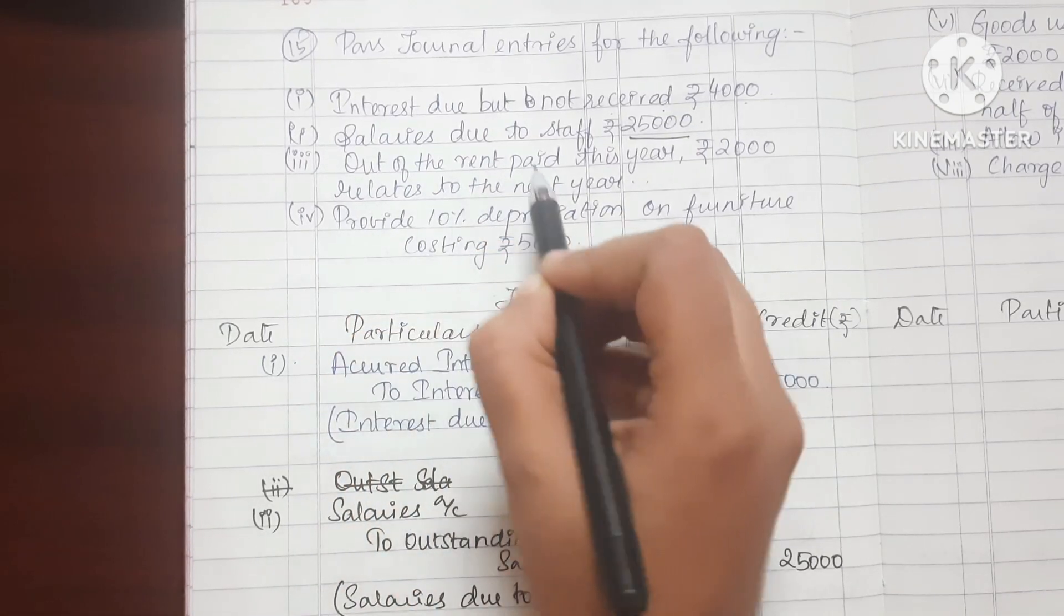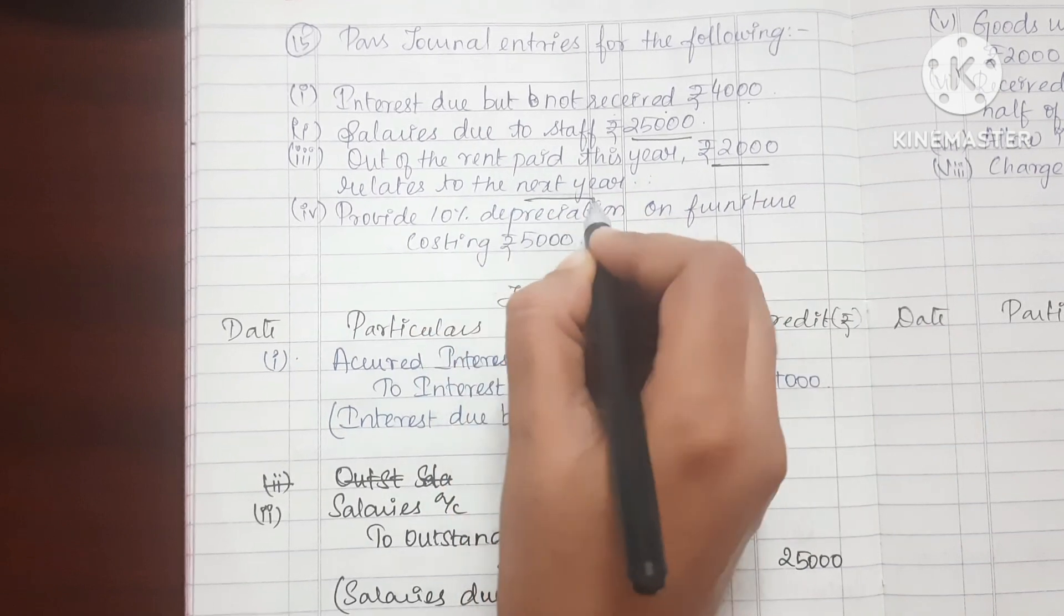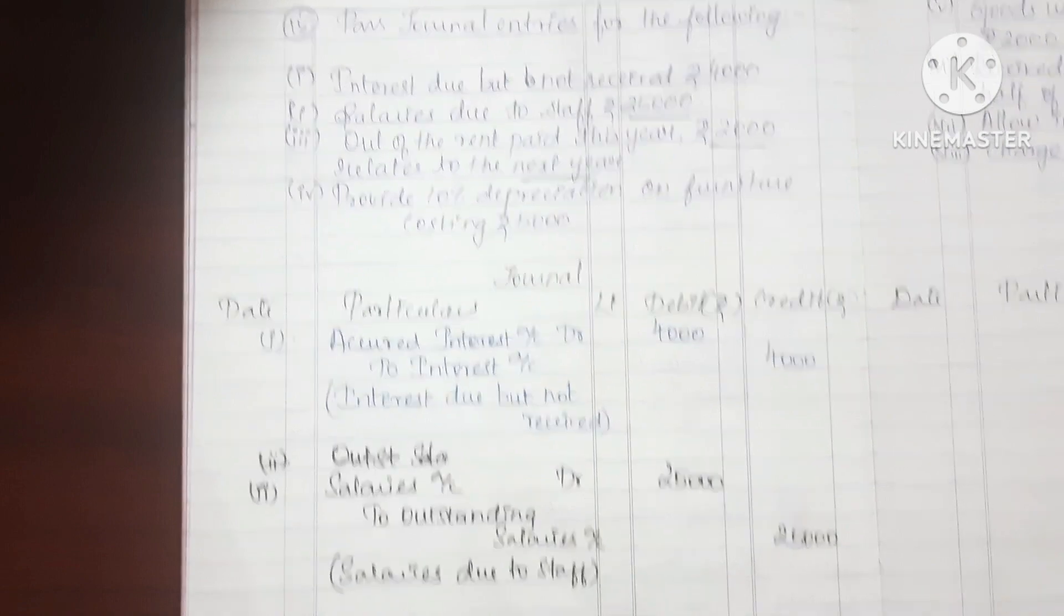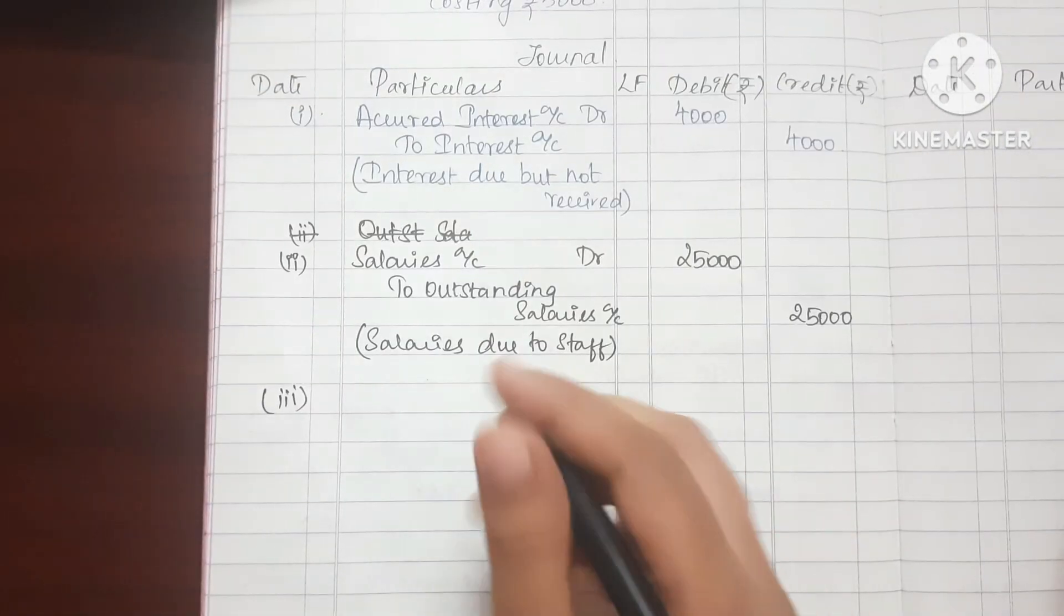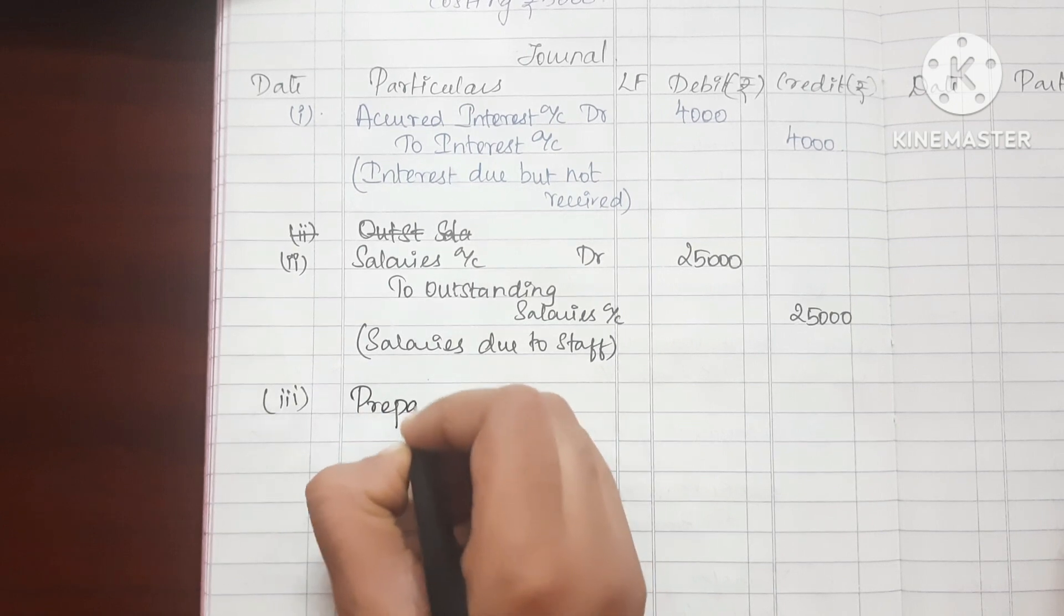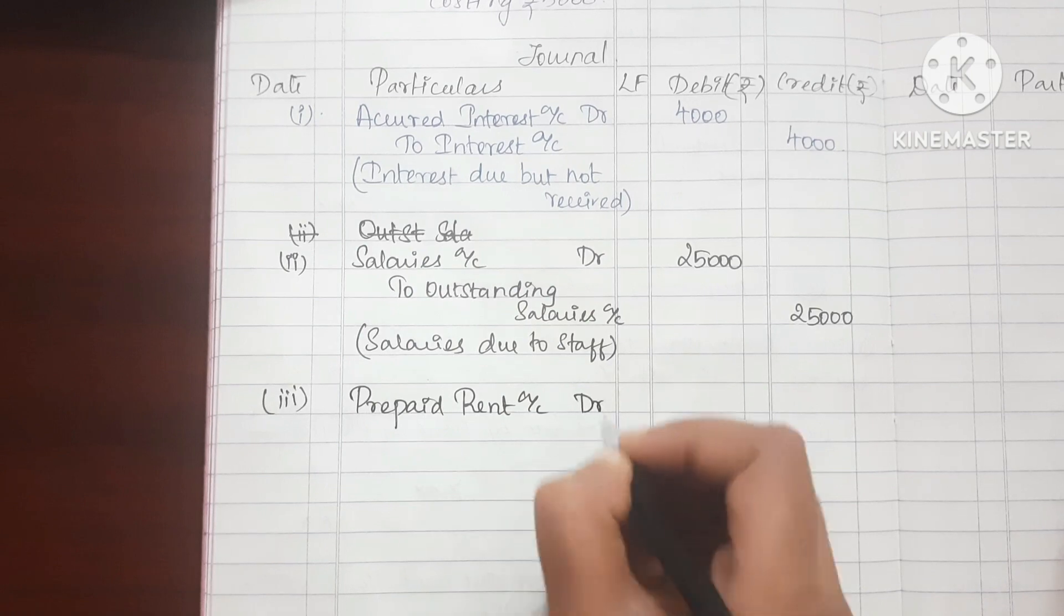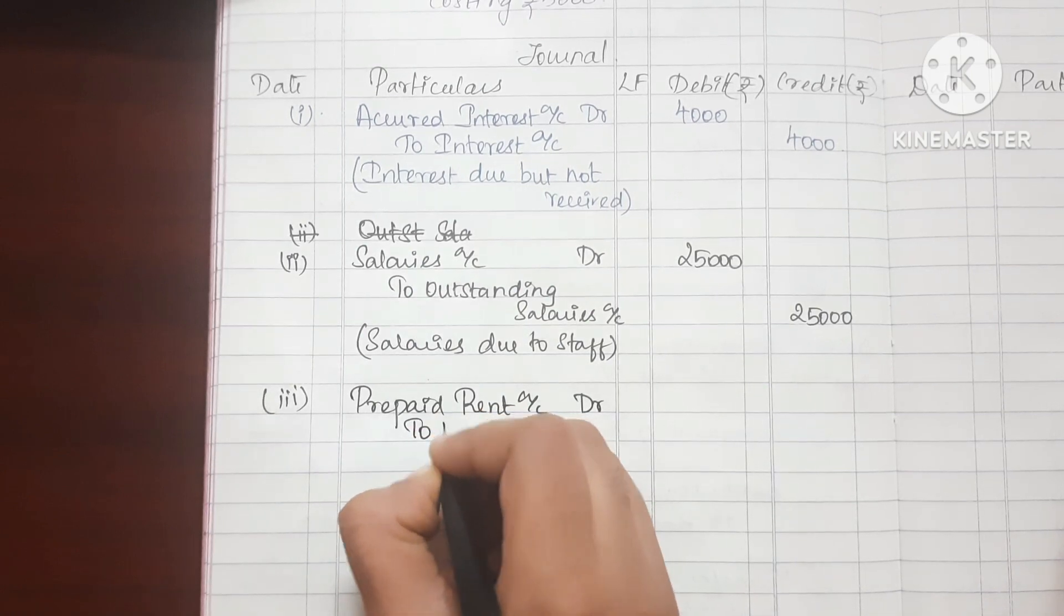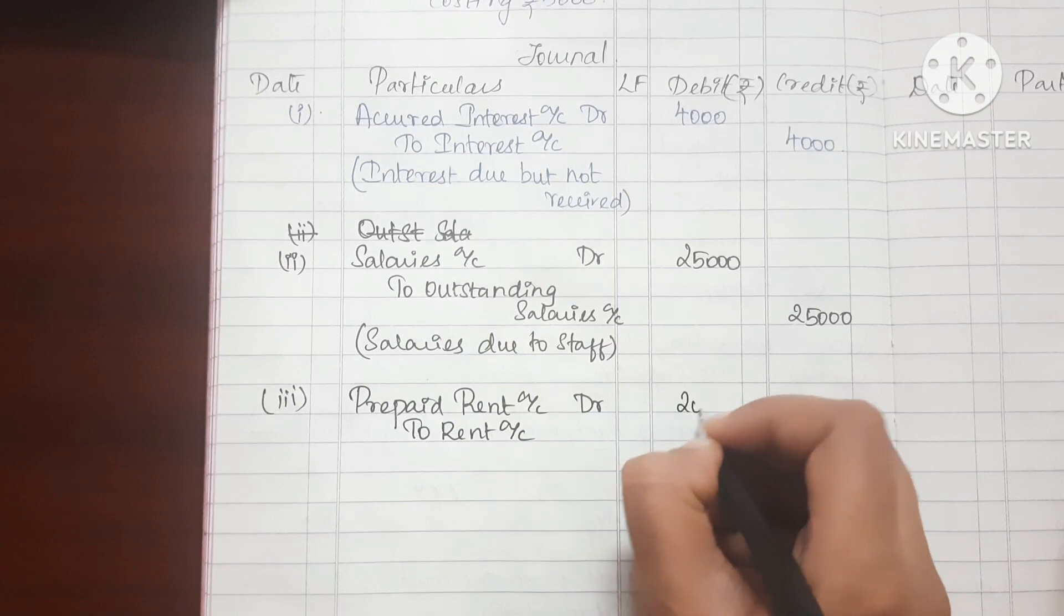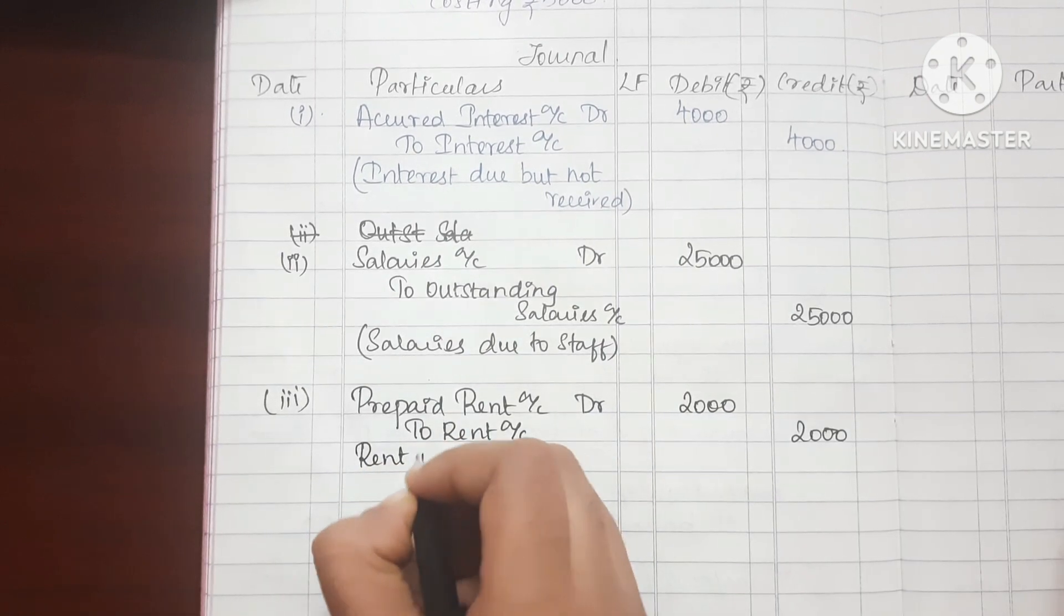Third sub-division: Out of rent paid this year, 2000 related to next year. So next year, in this year paying. This year, prepaid rent. Prepaid Rent Account debit to Rent Account, amount 2000. Rent paid in advance.